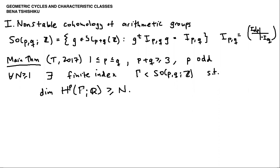The cohomology is appearing in degree p, which is like the real rank or the Q-rank of this arithmetic group. The statement of the theorem is: you can make the cohomology in degree p as large as you want by passing to finite index subgroups.